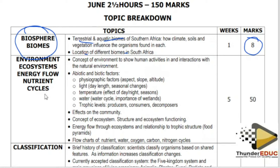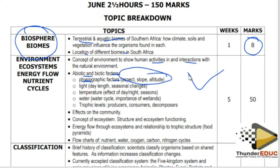Here they talk about human activities and interactions, biotic factors, abiotic factors, and physiographic factors. We like to ask about physiographic factors because they confuse students. They bring a slope diagram and ask you what is being shown — the answer is 'aspect,' because it shows the direction of the sun relative to the slope. You also need to know about slope and altitude.